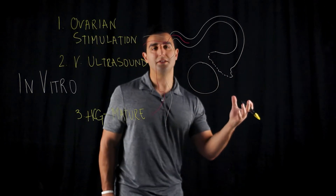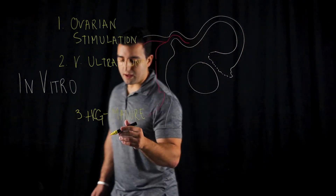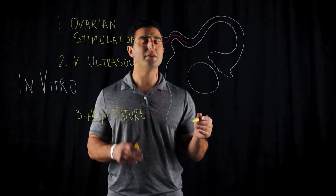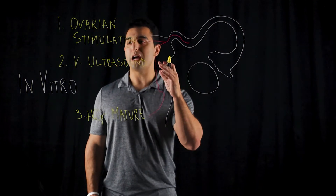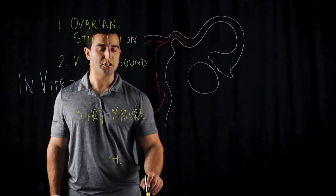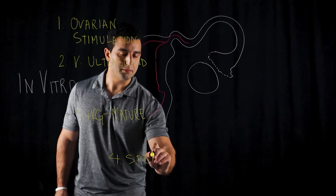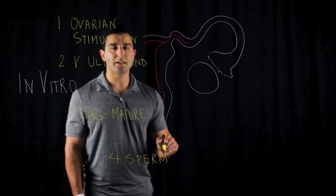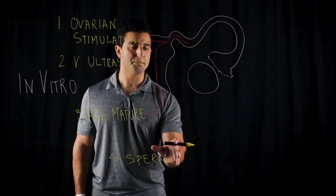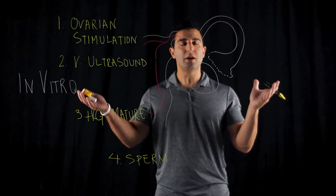Now you have a mature egg. What else do you need to allow proper fertilization? You need sperm. After the oocytes are retrieved, within 34 to 37 hours it is important to obtain sperm. Sperm retrieval occurs — the man provides a semen sample through ejaculation, and the sperm is placed on a specific petri dish.